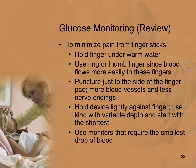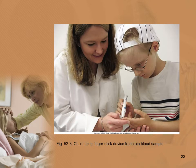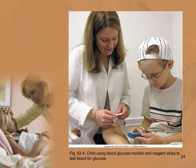Another school-age child is shown learning to check their own blood sugar with a healthcare provider present. The child can place the blood sample into the monitor and run it with supervision. You want to allow children to do as much as they can with appropriate supervision — not leave them fully independent, but give them some control over their own care.